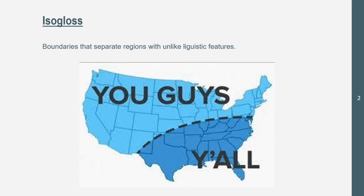We'll start with an isogloss, which is boundaries that separate regions with unlike linguistic features. There'll be some features that are alike; however, there'll be some that aren't alike, and those are your isoglosses.